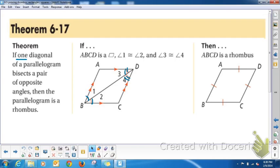Previously, 6-14, we said that if a parallelogram is a rhombus, then the diagonals bisect each pair of opposite angles. So this is like the converse of that theorem.